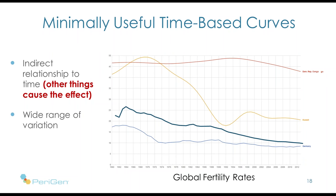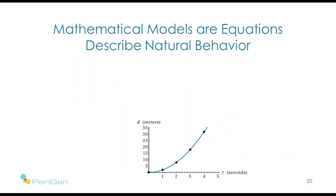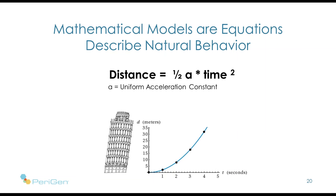Let's move to another concept: mathematical models, which have the potential to be very helpful in labour and delivery. A mathematical model is just an equation that describes some sort of process. When we have the problem of a ball falling over the Tower of Pisa, we can calculate how far it will travel with that equation. It's useful because I don't have to travel to Pisa to measure it — I've got that formula, and anywhere in the world I can use it to calculate distance and its relationship to time.